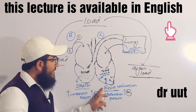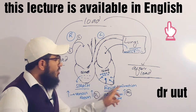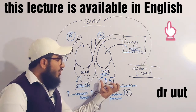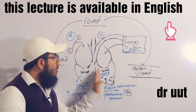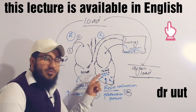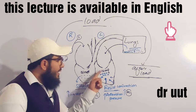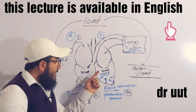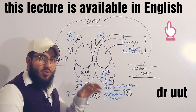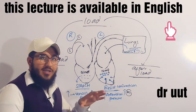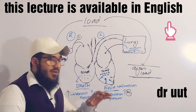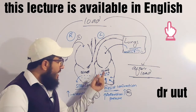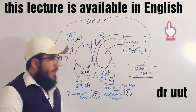This pressure will resist the contraction. When the ventricles contract, blood will pump out. The ventricle contraction causes blood to exert pressure, and this pressure provides strong resistance to ventricular contraction. This pressure is called afterload.